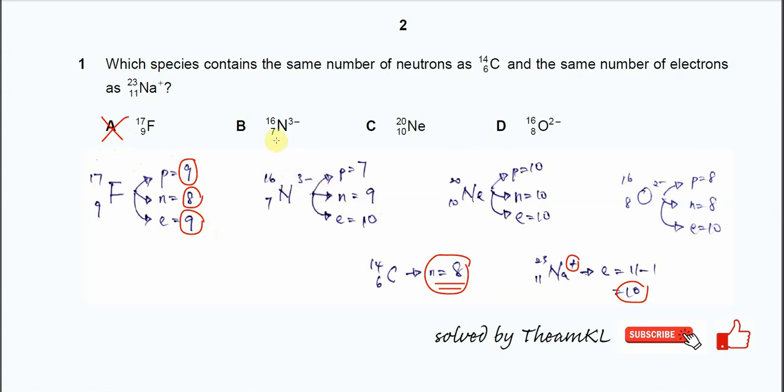For B, we have this nitride. Alright, so proton number is 7 and the neutron number is 16 minus 7, so you get 9. For the electron number, because it's 3 negative, so 7 plus 3, you get 10. Compare with these two numbers, neutron number not the same, electron number same. So B also not the answer.